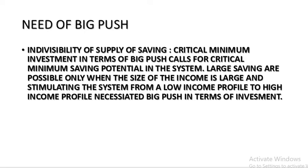Indivisibility of supply of saving: a critical minimum investment in terms of big push calls for a critical minimum saving potential in the system. In an underdeveloped economy, people have less income, so less saving and less investment. For large investment to be made by the government, there will be chances of growing income, and larger saving is possible when the size of income is large. So a big push is needed to stimulate the system from a low income profile to a high income profile, as the government must make large-scale investment so that people will have more income, more saving, and more investment.